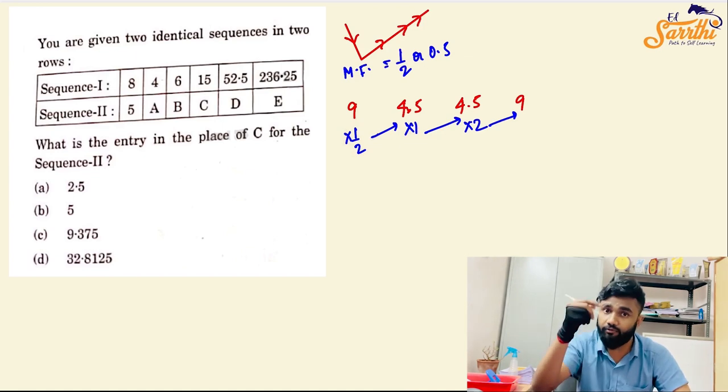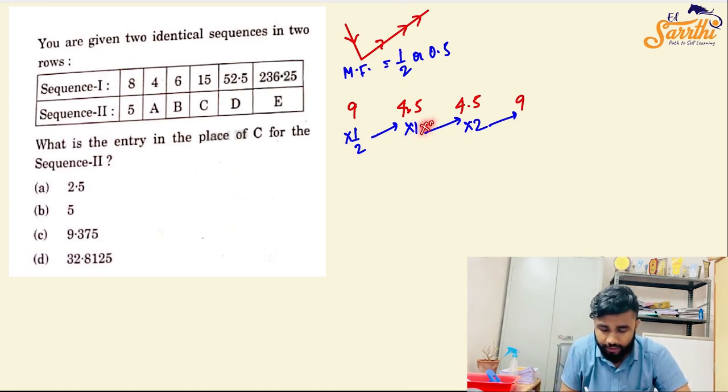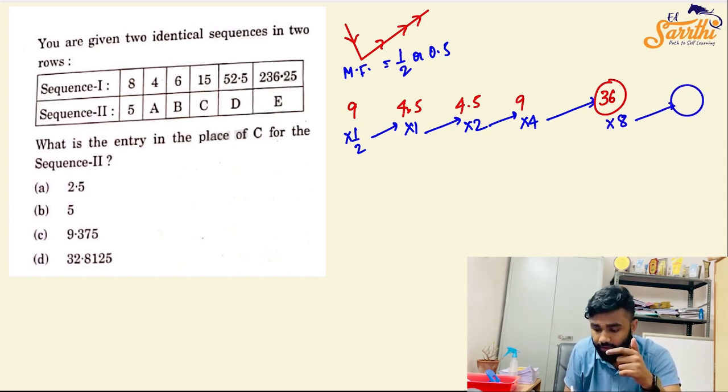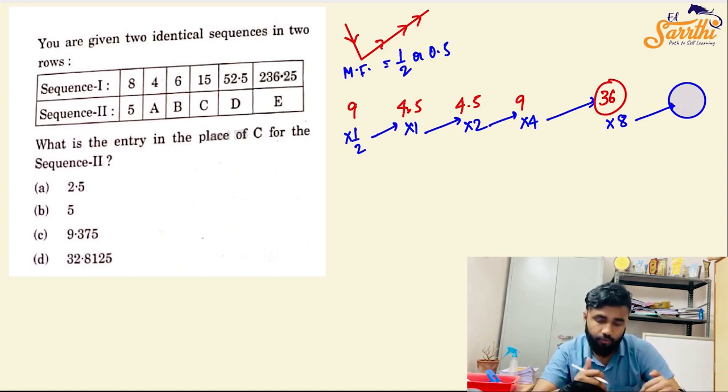Multiplying the multiplying factor with 2. Again, multiplying this with 2, taking a double, we get 2. What will happen next multiplying factor? Tell me quickly. Yes, it is into 4. What will be the value? 9, 4 is 36. What will happen next if I ask you? Into 4, 2 is 8. Whatever the value is, that will be my next term. I hope you are following this.